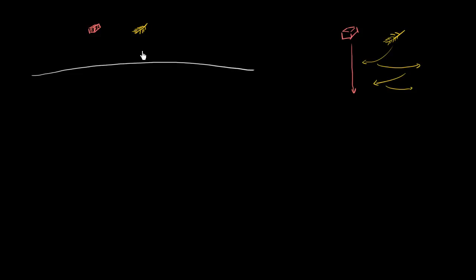But what would happen on the moon? What's interesting about the moon is there's no atmosphere — no air to provide resistance for either the brick or the feather. So what do you think is going to happen?